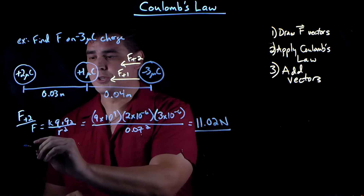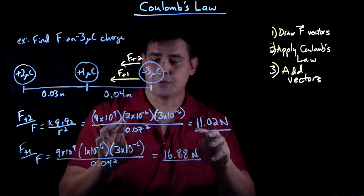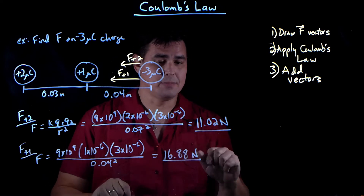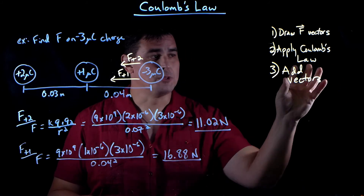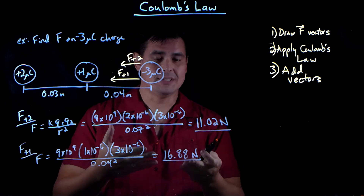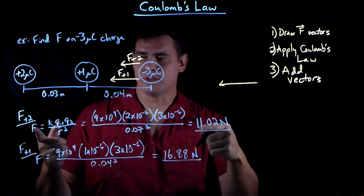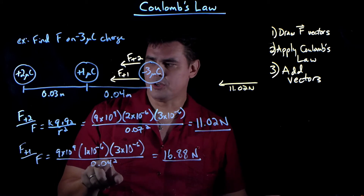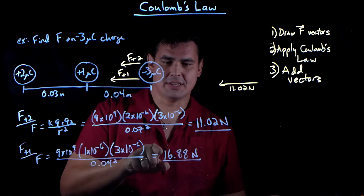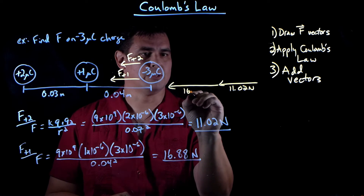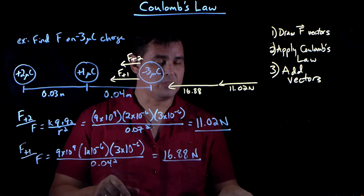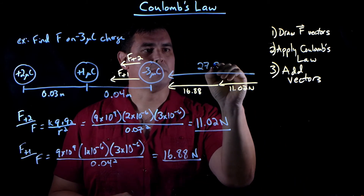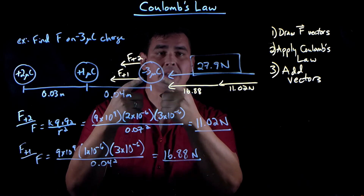Now for the plus-one charge: 9 times 10 to the 9th, times 1 times 10 to the minus 6, times 3 times 10 to the minus 6, divided by 0.04 squared — that gives 16.88 Newtons. Third step: add the vectors. Since both forces are along the same line, I just add them head to tail: 11.02 Newtons plus 16.88 Newtons gives a net force of 27.9 Newtons acting on the minus three micro-Coulomb charge.